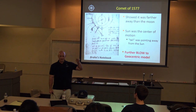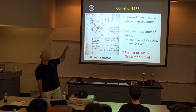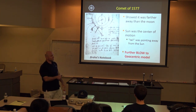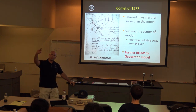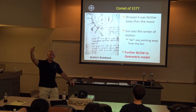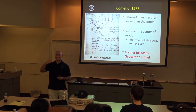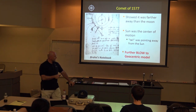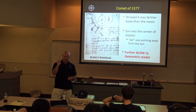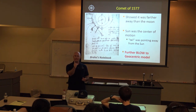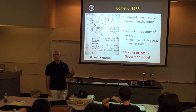Another event that dealt a blow to the Aristotelian view was the great comet of 1577. Tycho's notebook sketch of this comet shows he was able to demonstrate it was further out than the moon — part of the celestial realm — meaning change was occurring in the supposedly unchanging heavens. He also showed that the sun was the center of its motion, because the tail of the comet points away from the sun, and mapping the comet's path showed it going around the sun. Another fatal blow to the geocentric model.